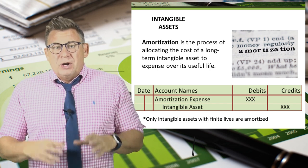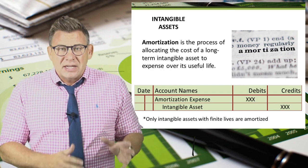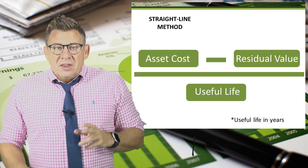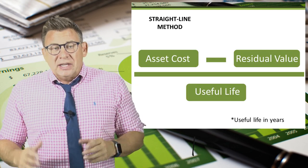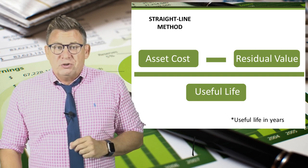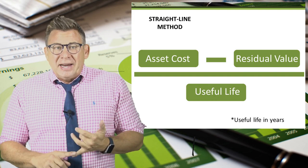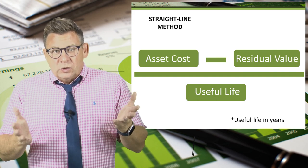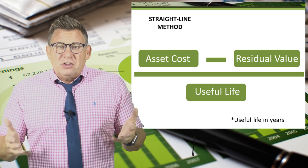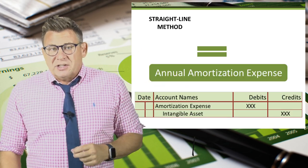When we record amortization, we debit amortization expense and credit the intangible asset. The method used to calculate amortization expense is the straight-line method used in depreciation: intangible asset cost minus its residual value, which will almost always be zero, divided by the useful life in years. This equals the amount of annual amortization expense.